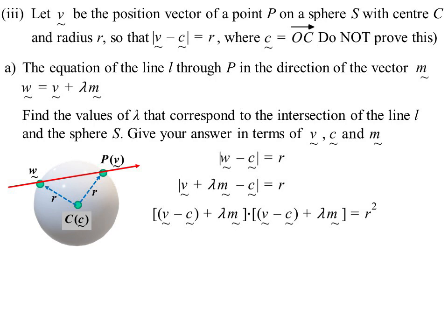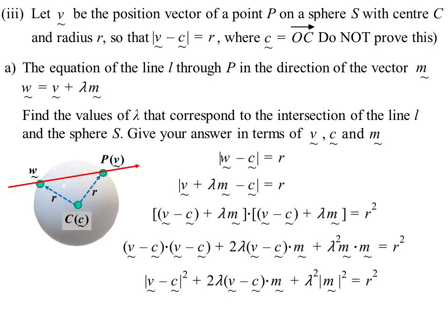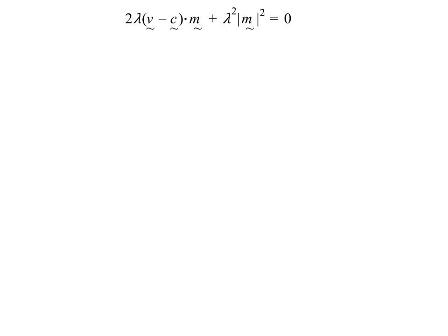Because now I can expand this out and see what happens. We'll get (v - c)·(v - c), twice λ(v - c)·m, and then λ²m·m. (v - c)·(v - c), that's magnitude of |v - c|² and at the other end of it, m·m will be the magnitude of |m|², and the middle bit I've just left in the dot product. But |v - c|, the magnitude of v - c, that's the radius. That was the length of that vector, so I know that's r². That's nice, because that will cancel with the r² on the other side. I now have it down to this.